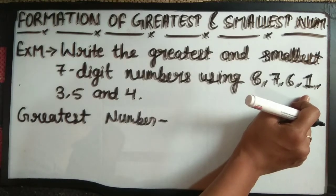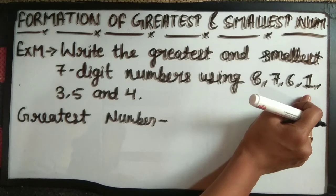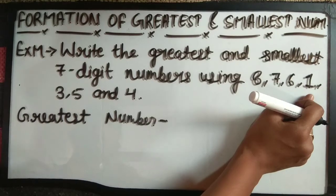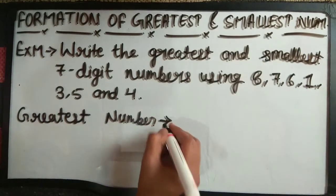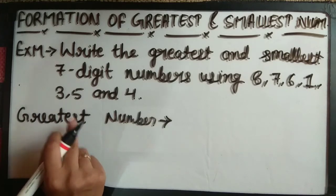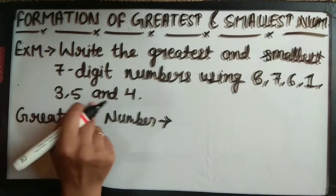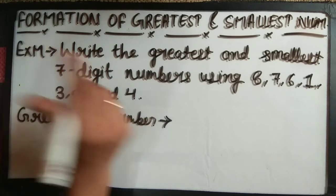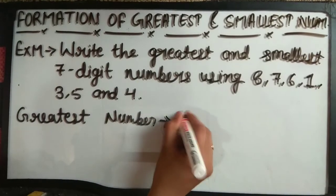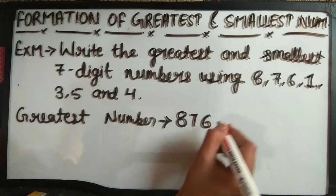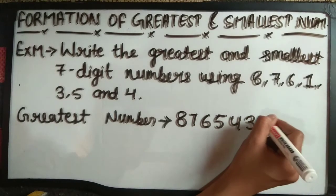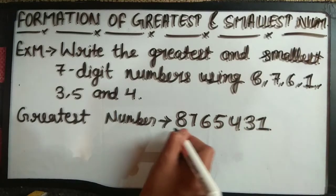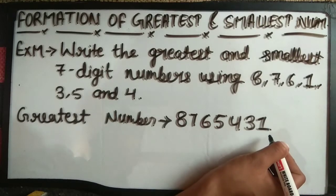What does descending order mean? When we write the greatest number, we go from the largest digit to the smallest. So the biggest number is 8, 7, 6, 5, 4, 3 and 1. This is our greatest number.